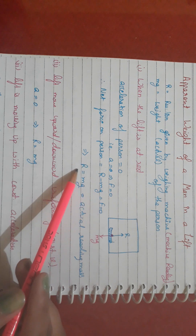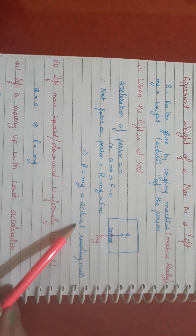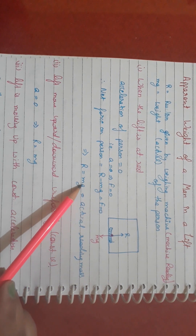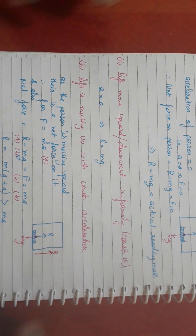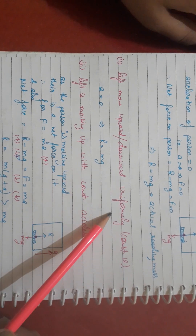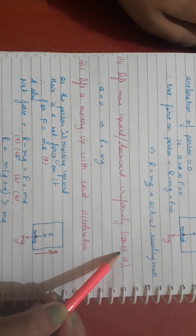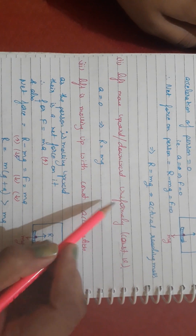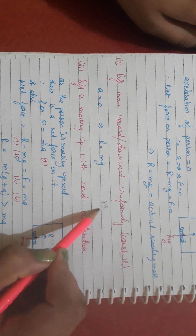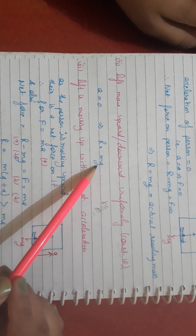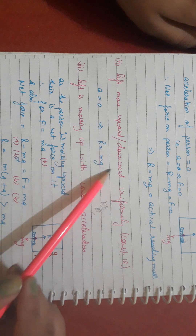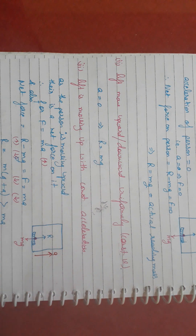R represents the reading of the weighing machine. If R equals mg, the machine will measure the actual weight of the person. This also applies when the lift moves at constant velocity, because acceleration is zero and net force is zero, so again R equals mg.